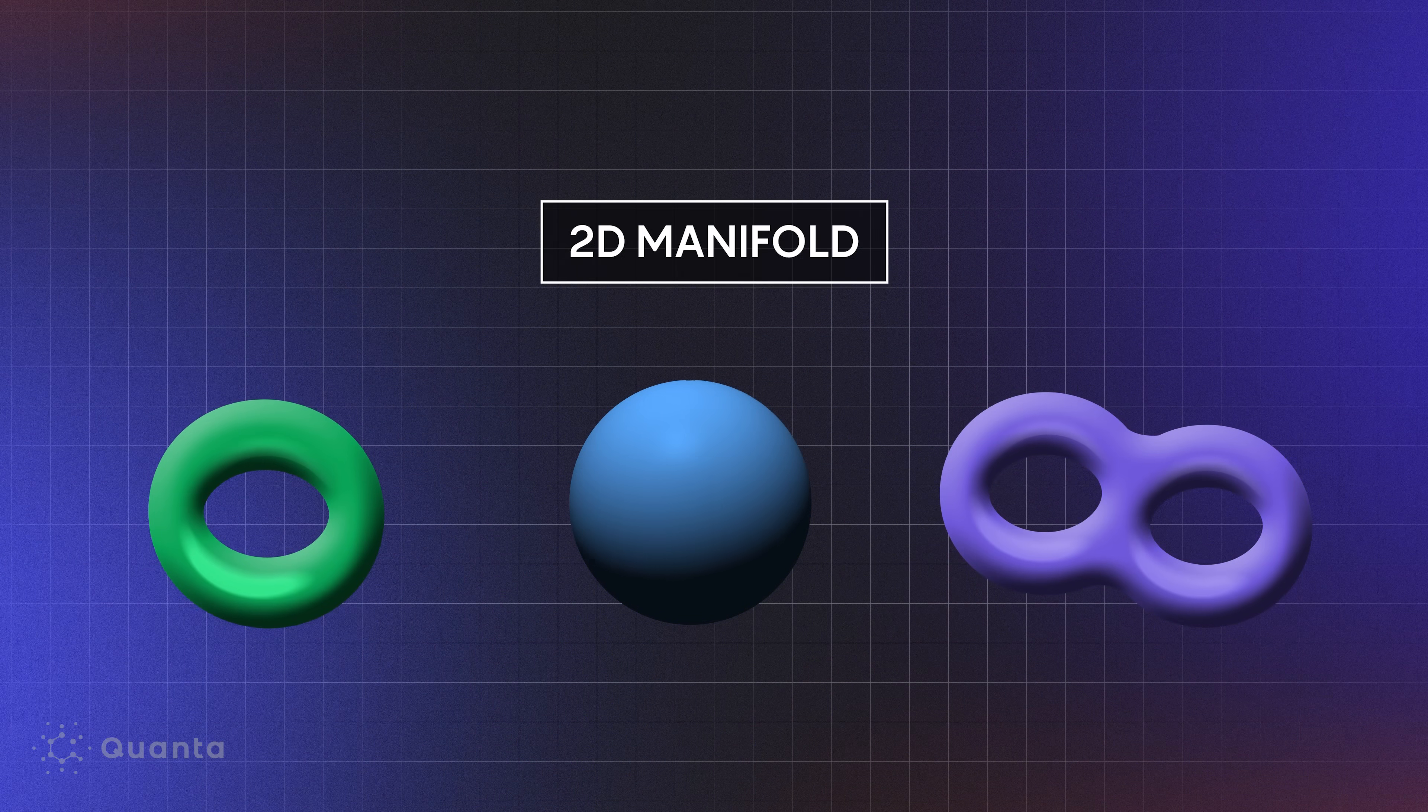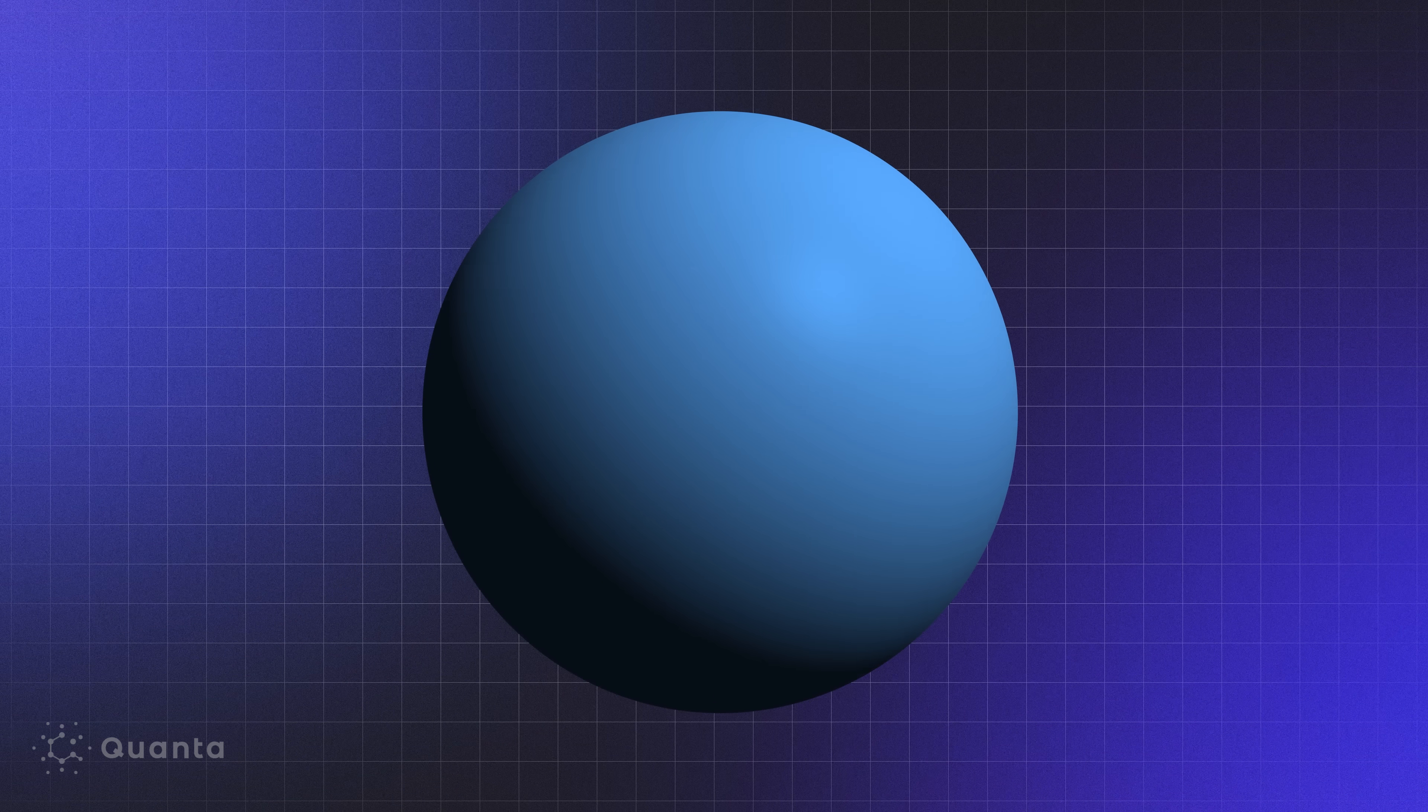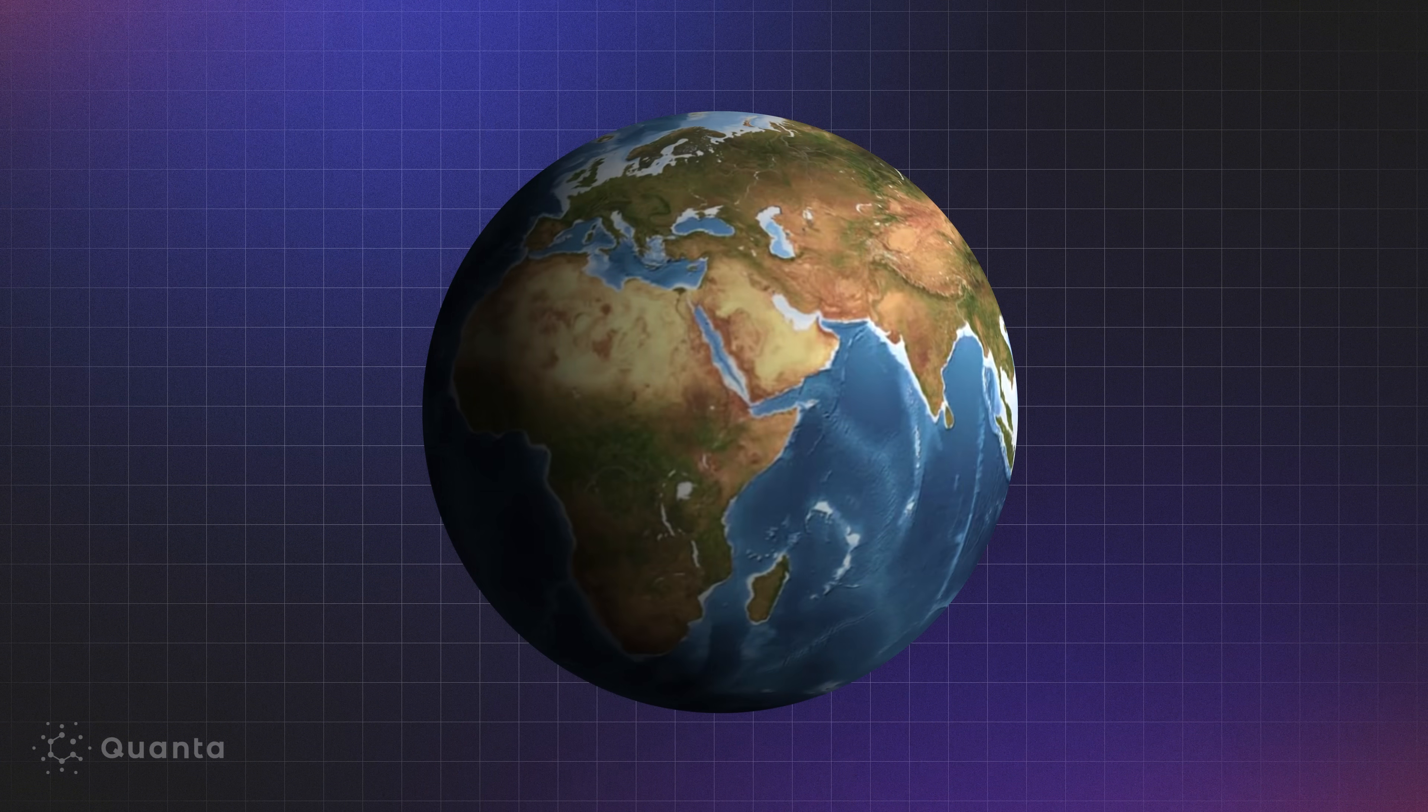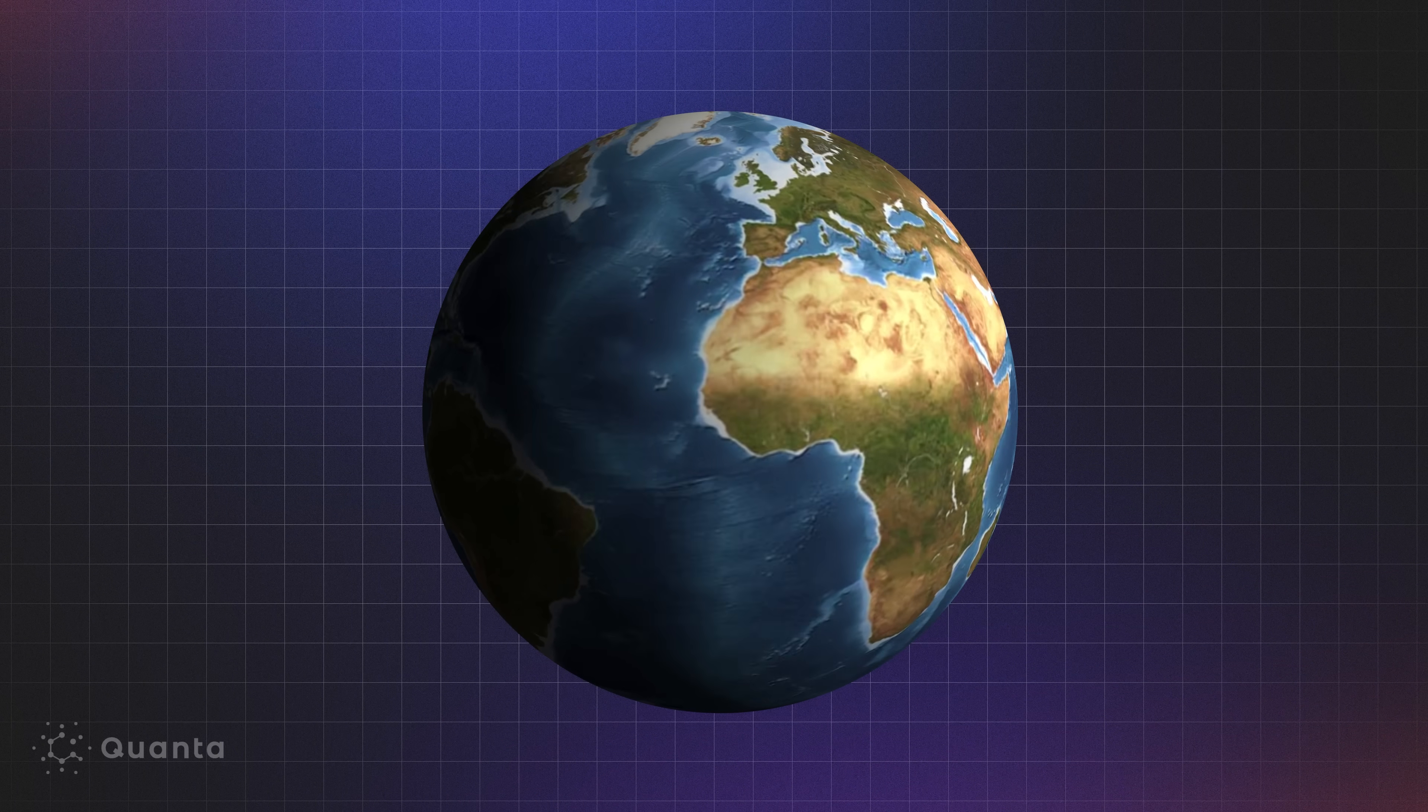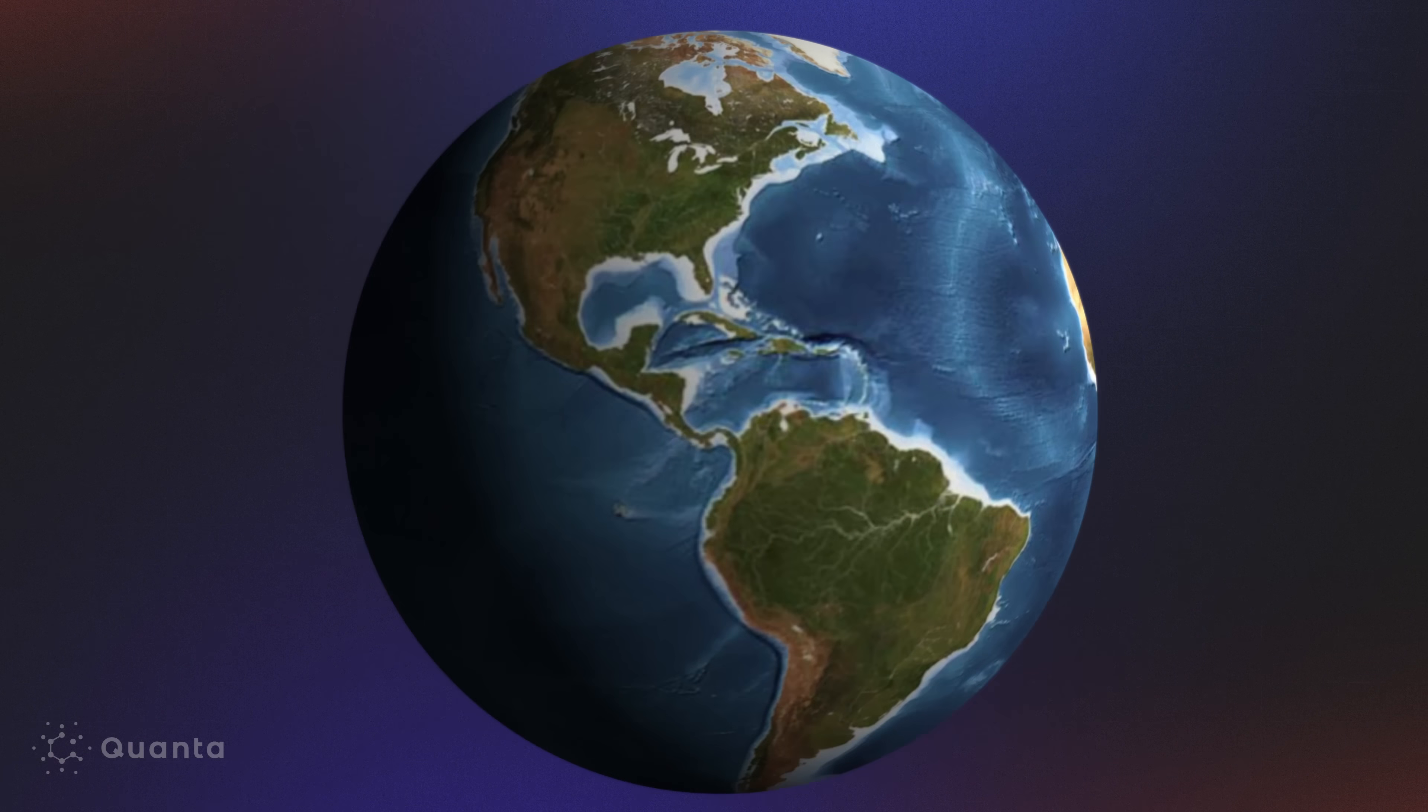Two-dimensional manifolds are much easier to imagine. They're surfaces, things like the boundary of a ball is called a sphere. The sphere, like the surface of the Earth, is a two-dimensional manifold. Because even though the Earth is not flat, it's very difficult to tell that.